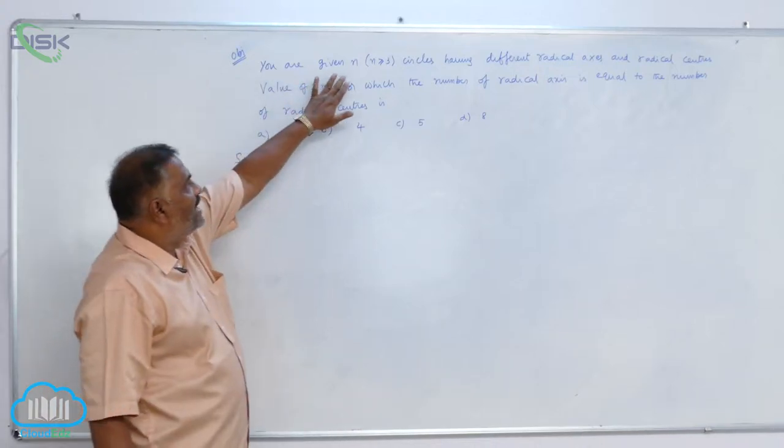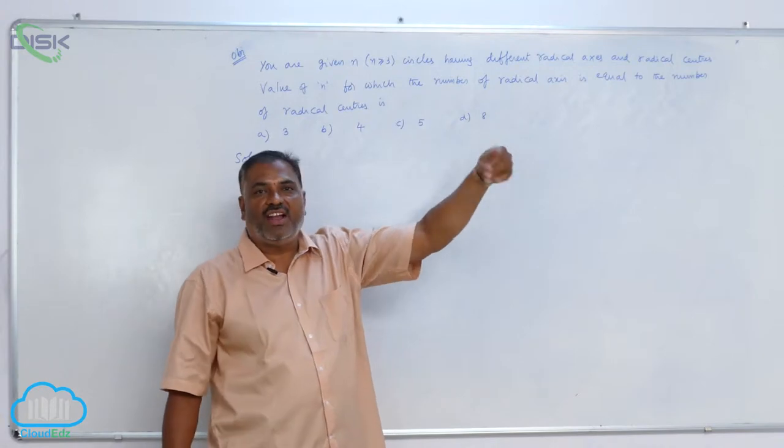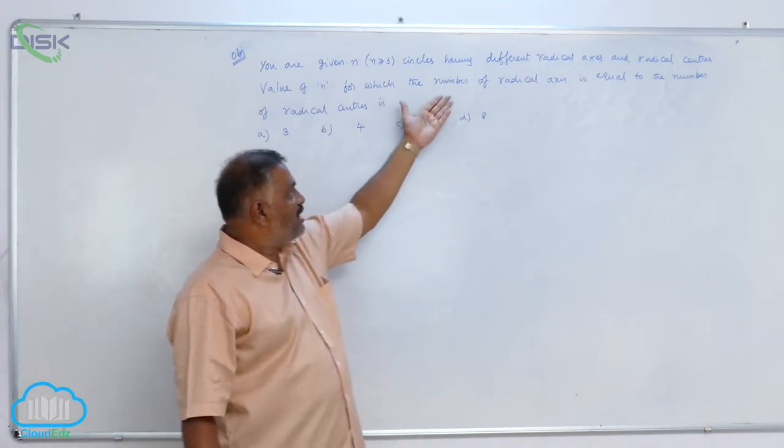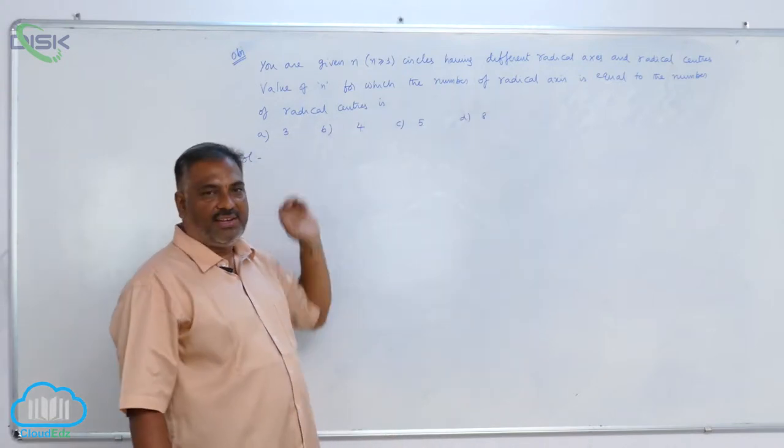You are given n circles having different radical axes and radical centers. Find the value of n for which the number of radical axes equals the number of radical centers.